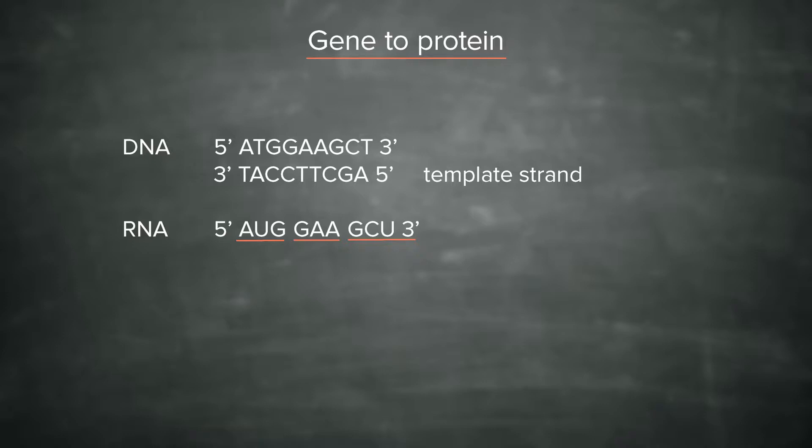And now we can take this RNA and we can divide it into codons, and we can translate it: AUG, GAA, GCU. And the protein that will come out of this translation: methionine, lysine, threonine, and these are covalently joined together.